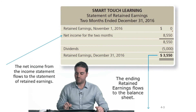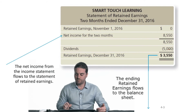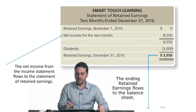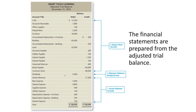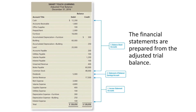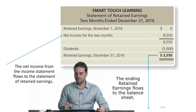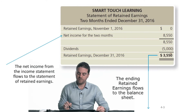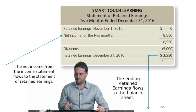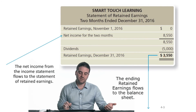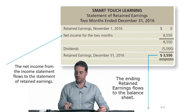We add the net income to the beginning balance of retained earnings, then subtract the dividends — which is $5,000 in our example. How do we know it's $5,000? Go back to the trial balance; dividends were $5,000. Your trial balance is your main resource. So zero plus $8,550 minus $5,000 dividends equals $3,550. The retained earnings ending balance at December 31st is $3,550 — it increased from zero to $3,550.